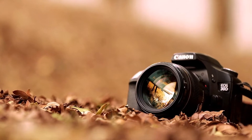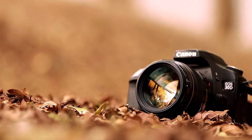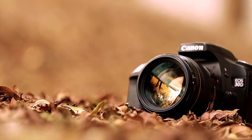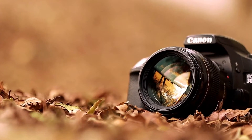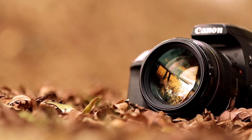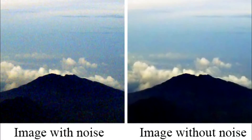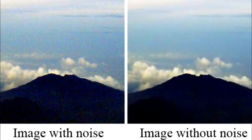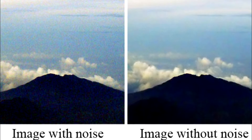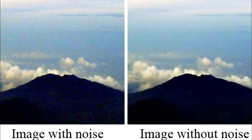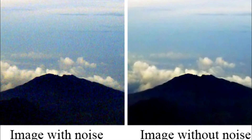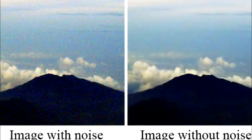In digital photographs, noise is the commonly used term to describe visual distortion. It looks similar to grain found in film photographs, but can also look like splotches of discoloration when it's really bad and can ruin a photograph. Also, noise tends to get worse when you're shooting in low light.